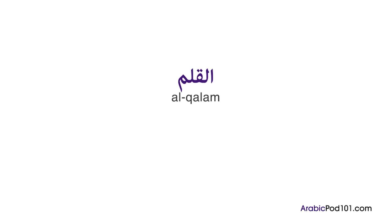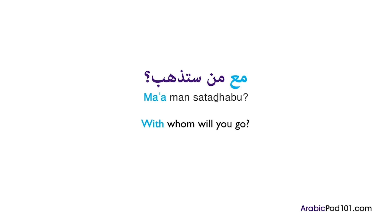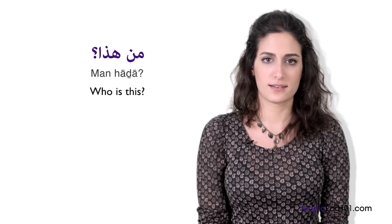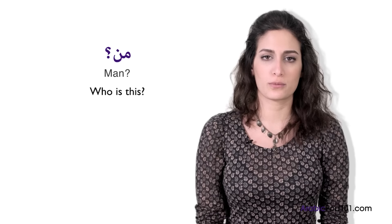As a question word, من can also be used to ask 'who did something.' In a museum, for instance, you can ask: من رسم هذه اللوحة؟ — 'Who painted this painting?' Another question formula with من that is used a lot is لِمَن — in this case the meaning is different because it can be translated as 'whose.' So 'whose pencil is this?': لِمَن هو هذا القلم؟ And 'with whom will you go?': مع من ستذهب؟ The formula مع من means 'with whom.'